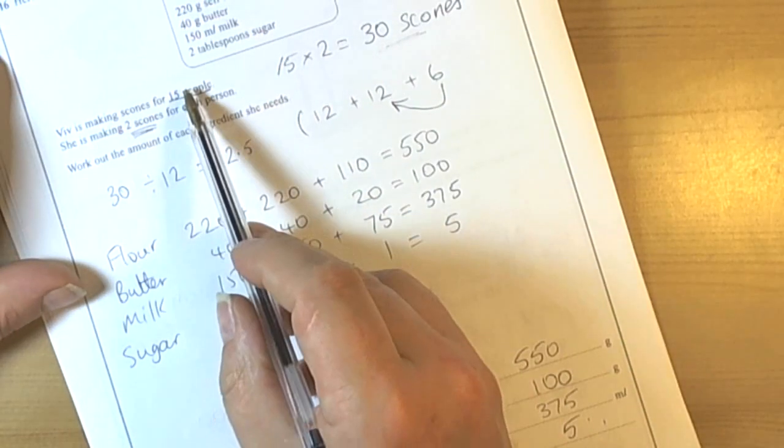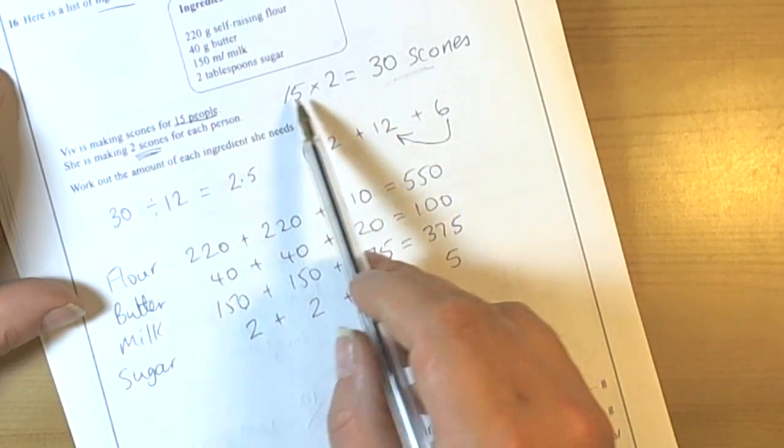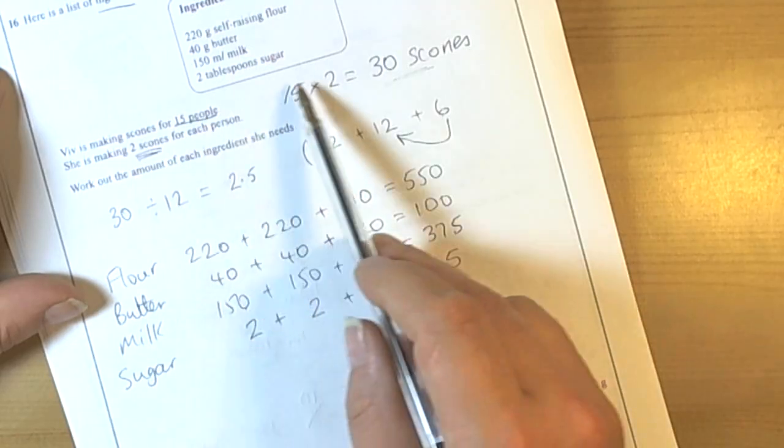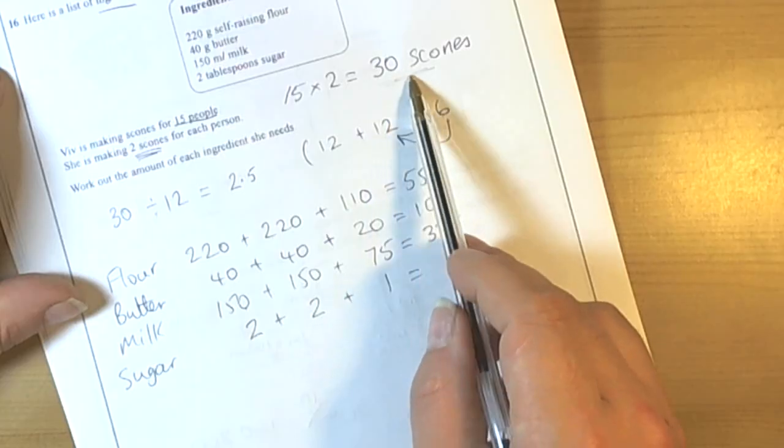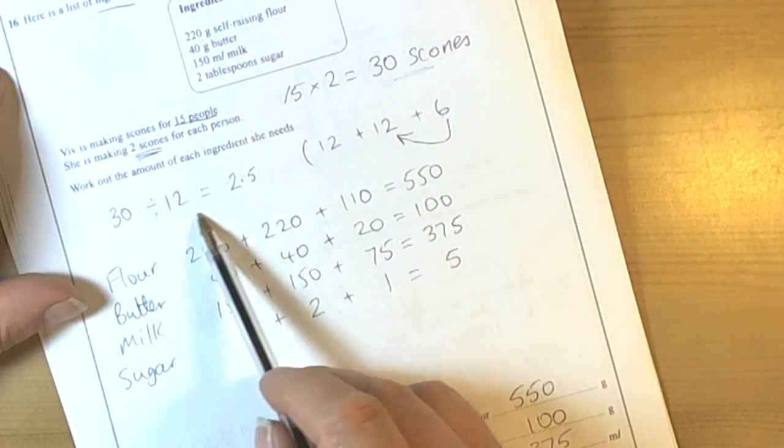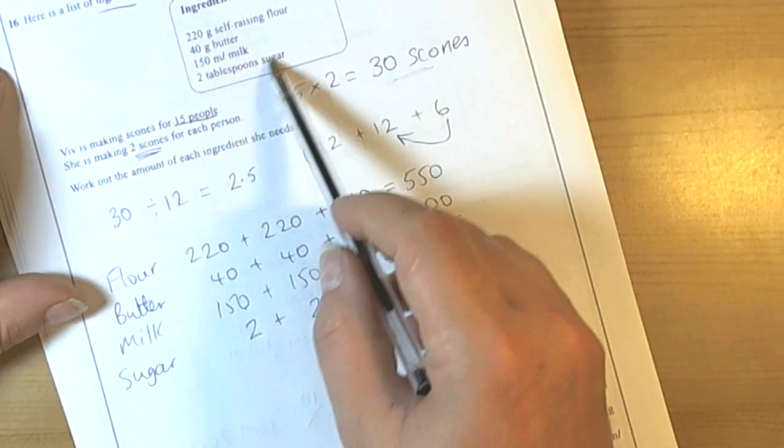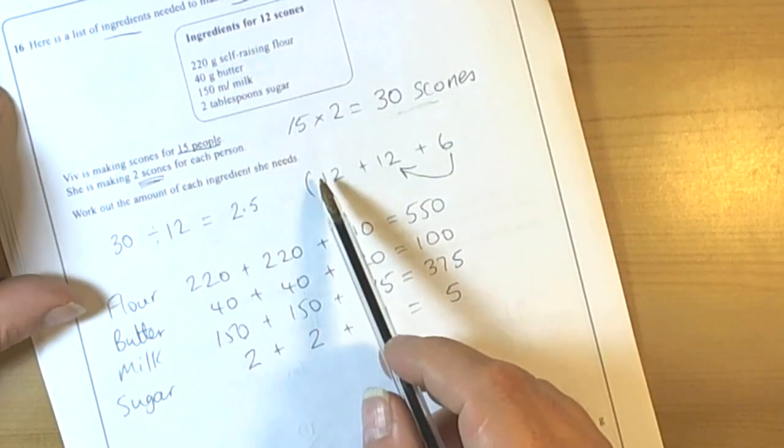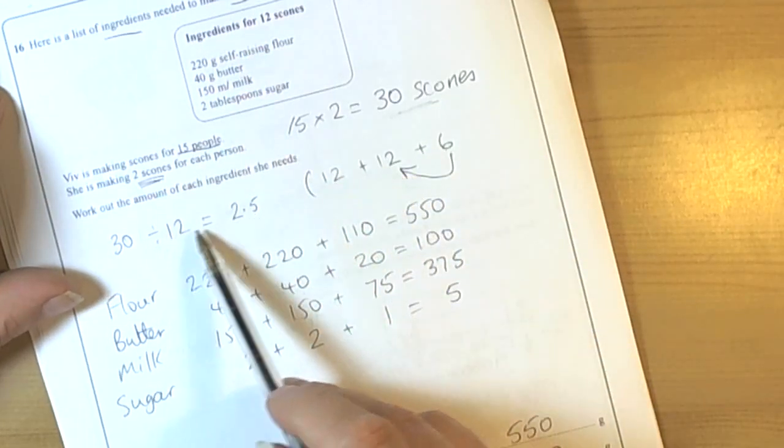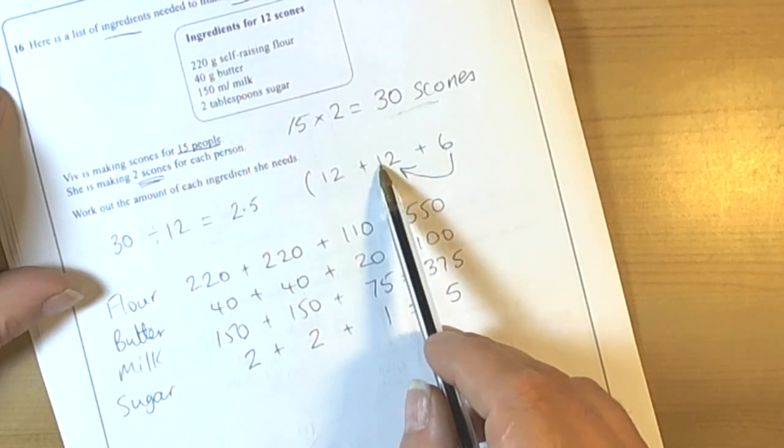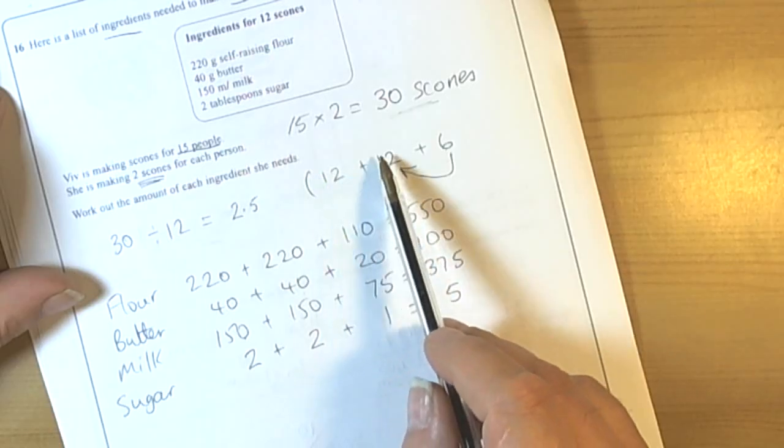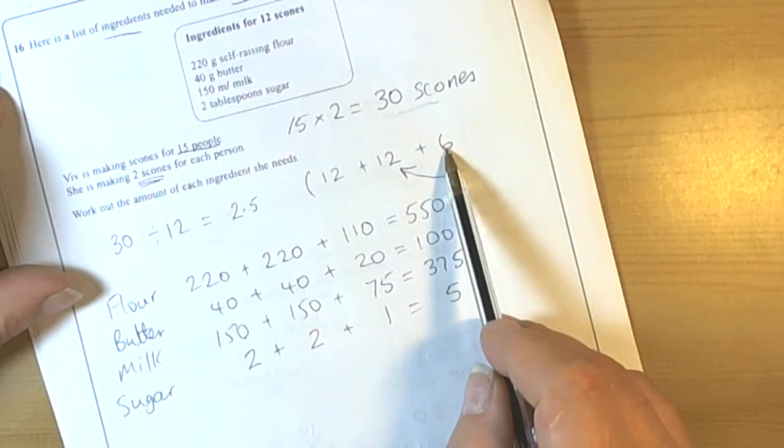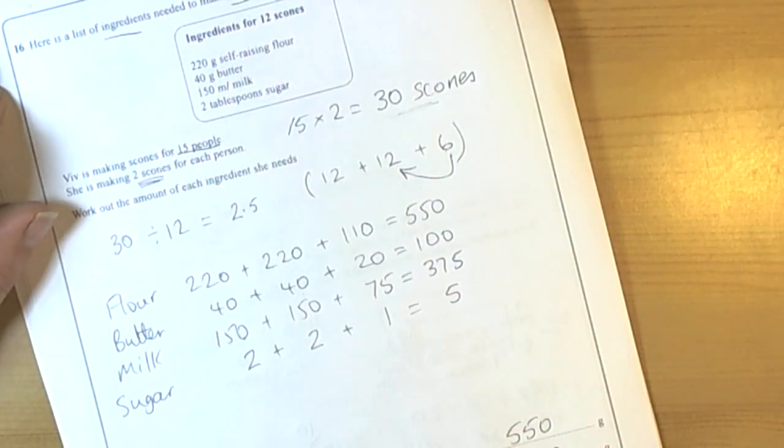So again, highlighting key information, make sure we don't miss anything. We need two scones for 15 people, hence the reason we're working out for 30. Look at ways of looking at how we're going to change the recipe for 12 into a recipe for 30. And 12 built up to 30 by having one lot, the second lot was 24 scones, and then half again. So a recipe question.